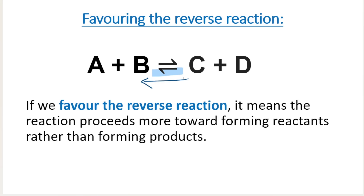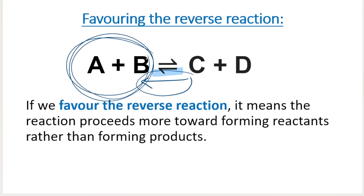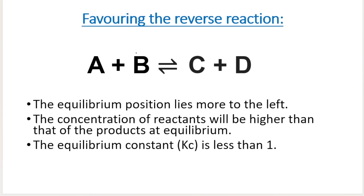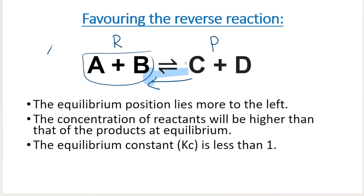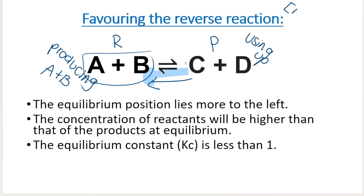If we favor the reverse reaction, think of this one as being the chosen one — the reaction going this way. The way the arrow points is what we are producing. We are producing more of A and B, using up C and D. If we favor the reverse reaction, we're going to be producing more A plus B and using up C and D. So the concentration of the reactants on the left-hand side is going to be greater than the concentration of the products.